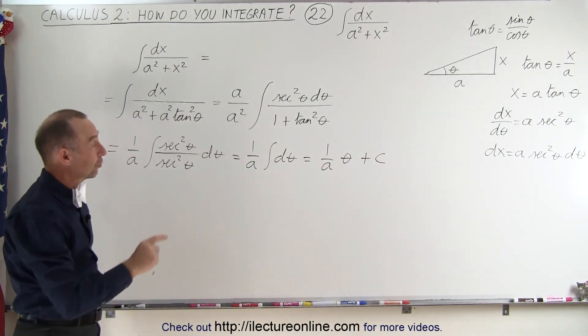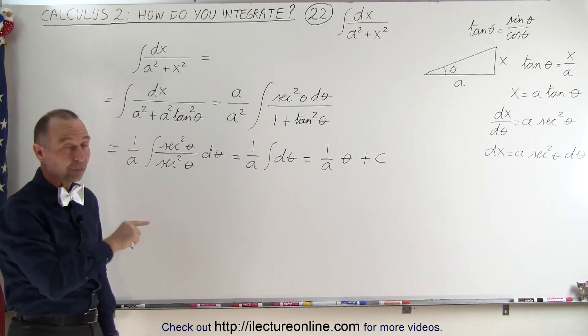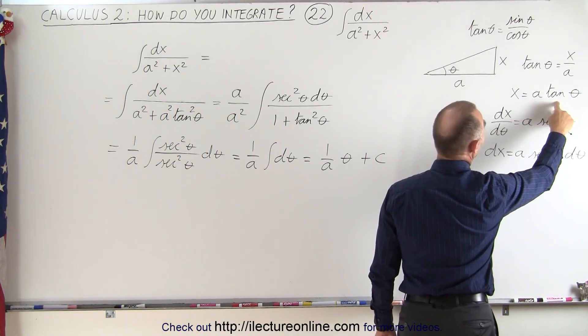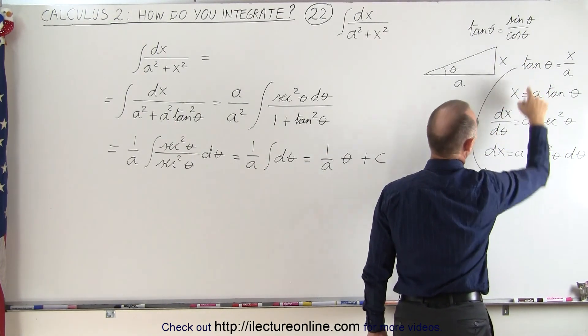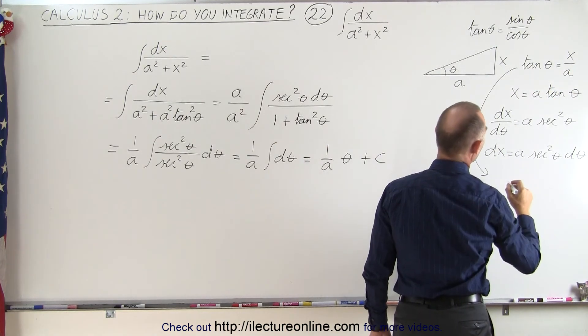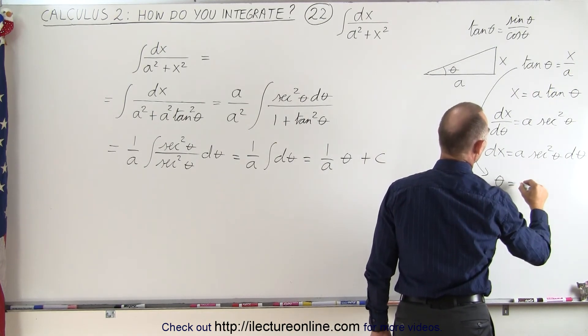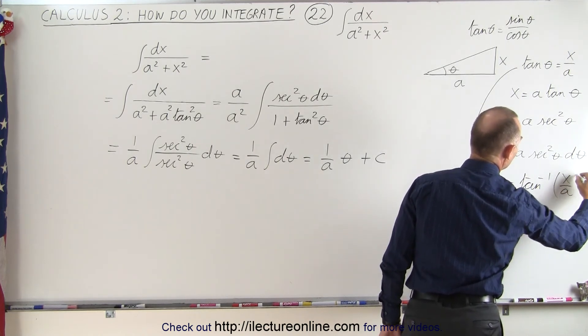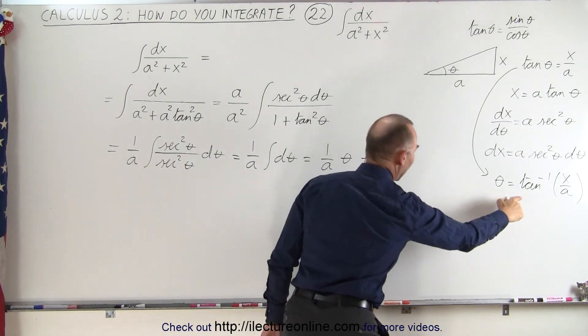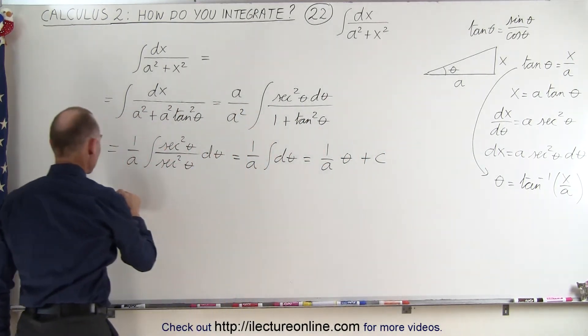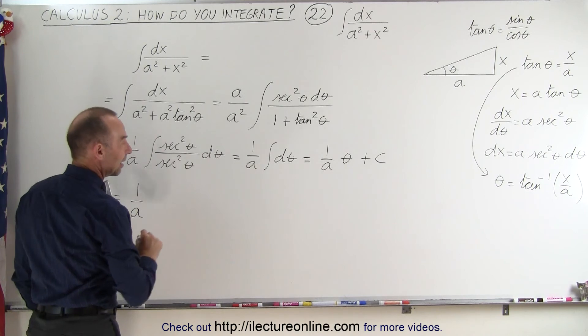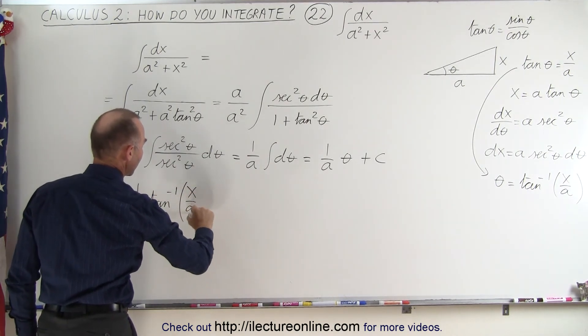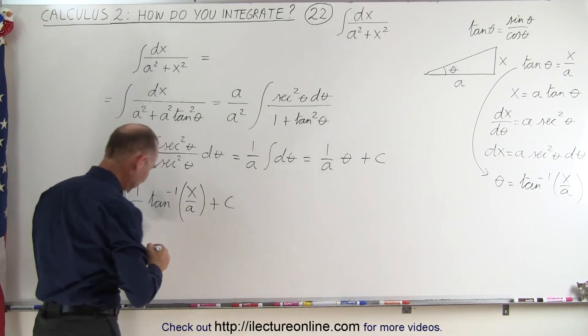Now all we have to do is turn θ back into something in terms of x. So now we go back over here and we realize that x = a tan θ, or over here we can say that tan θ = x/a, which means that θ is equal to the inverse tangent of the ratio of x/a. And so we can then replace this by that, which means that the integral then becomes 1/a times the inverse tangent of x/a, and of course we still have our constant of integration.